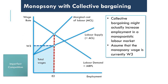Now let's look at the impact of trade union activity in monopsony. Here we have an imperfectly competitive labour market where the individual firm has some wage-setting power. Currently the firm will choose to employ E2 workers, where the marginal cost of labour (MCL) meets the marginal revenue product of labour (MRPL), but to attract E2 workers it only needs to pay a wage of W3.